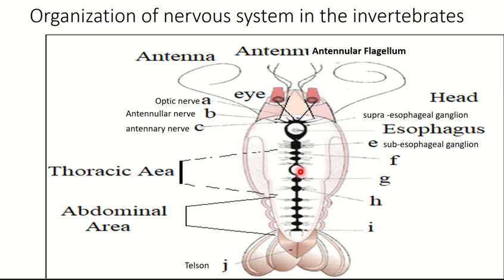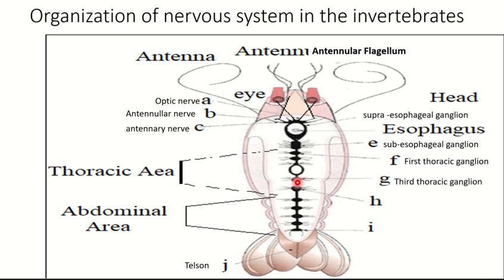In the thoracic area we have three thoracic ganglia. Pay attention — this is the first thoracic ganglion, this is the second, and this is the third thoracic ganglion.